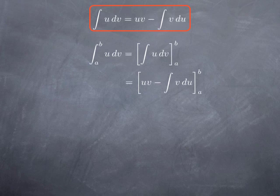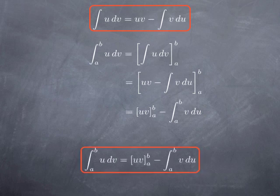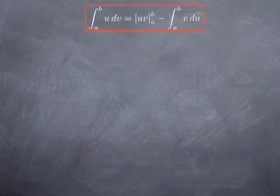So if we want to calculate the definite integral between a and b, according to the fundamental theorem of calculus, we evaluate the antiderivative — given by the integration by parts formula — between a and b. Evaluating u·v between a and b, and the integral of v·du from a to b, gives us the natural counterpart of the integration by parts formula for definite integrals.